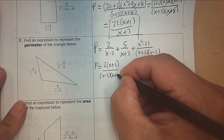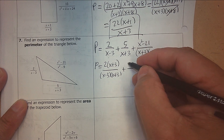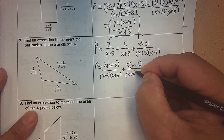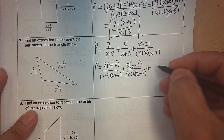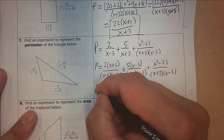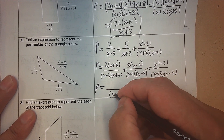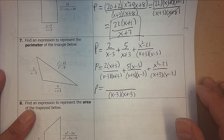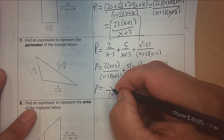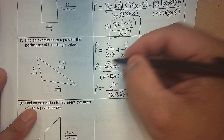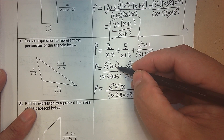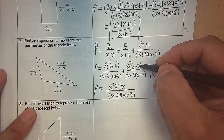Multiply top and bottom by x plus 3 so the first and last denominators match. The second one is missing an x subtract 3, so multiply by that. The last one is fine. Now we have a common denominator. Combining like terms in the numerator: there's an x squared, 2x and 5x make 7x, then 2 times 3 is 6, take away 15, take away 21.